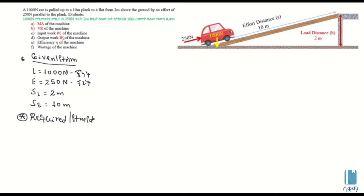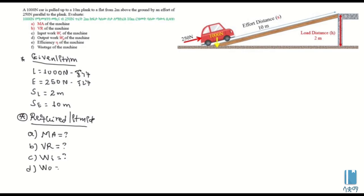The completion of this calculation will recognize: A is the mechanical advantage of the machine; B is the velocity ratio of the machine; C is the input work; C is the output work; and the machine itself.